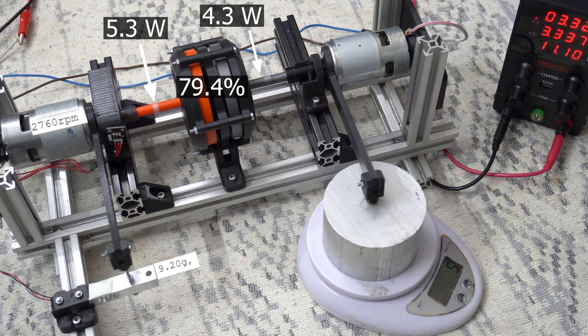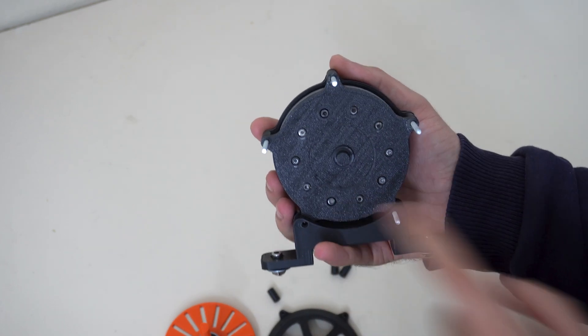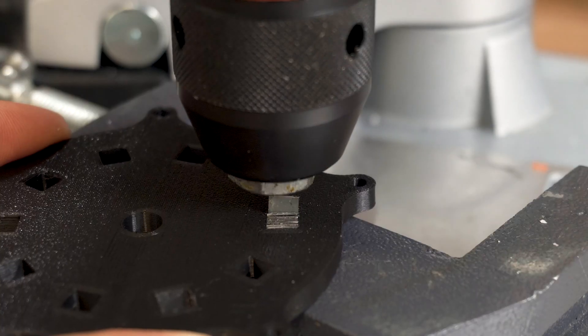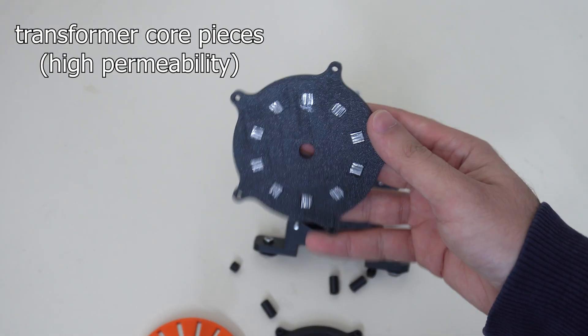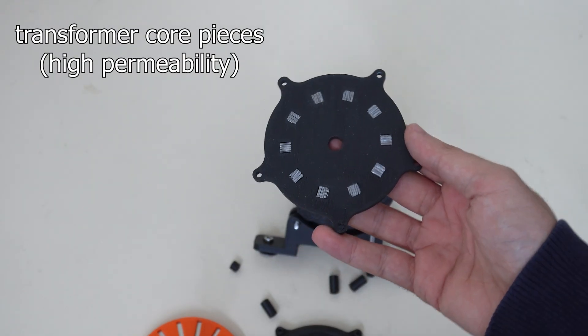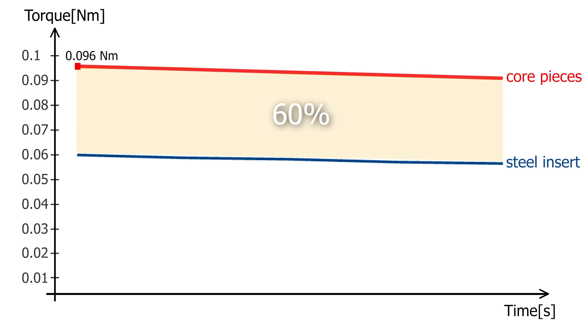By the way, this result was achieved with the flux modulator using steel inserts in the metal segments. There's also a modulator where I used transformer core pieces instead of steel inserts, and you can see the difference in their effect on the torque capacity.